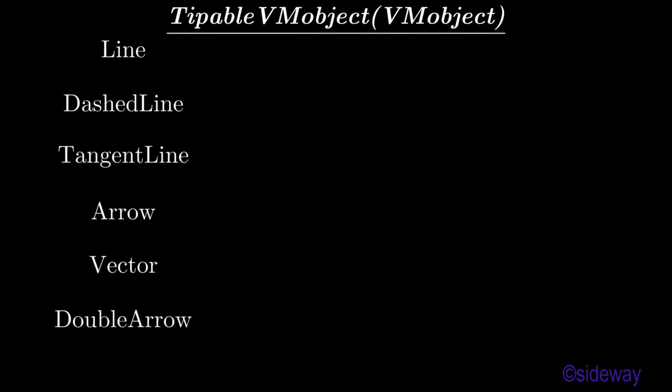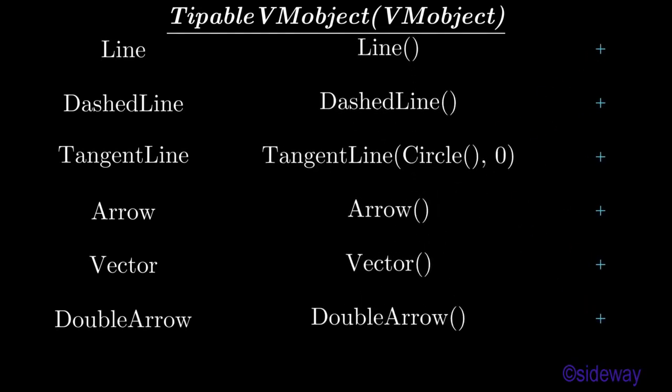Some other typical tipable beam objects are: line, dashed line, tangent line, arrow, vector, and double arrow.